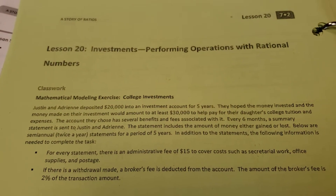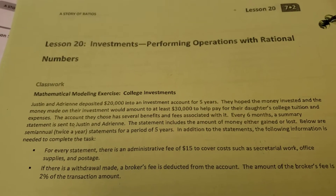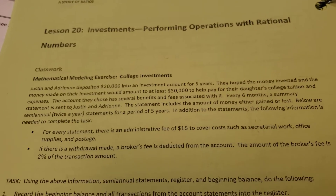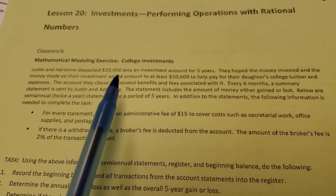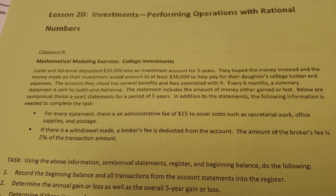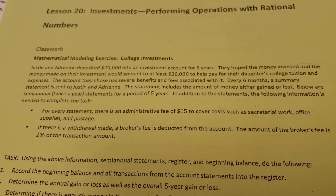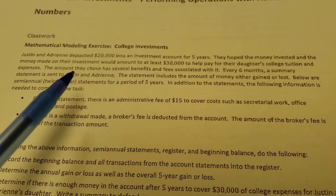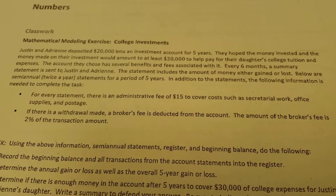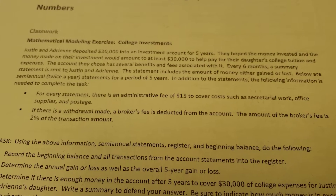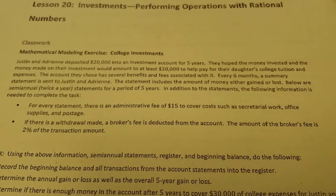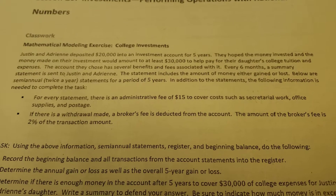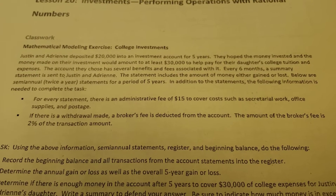Today we're going to be working on Lesson 20: Investments — Performing Operations with Rational Numbers. We're going to keep track of a transaction log or register and keep track of someone's account. We'll track ten different periods, since statements are sent every six months, twice a year over five years.